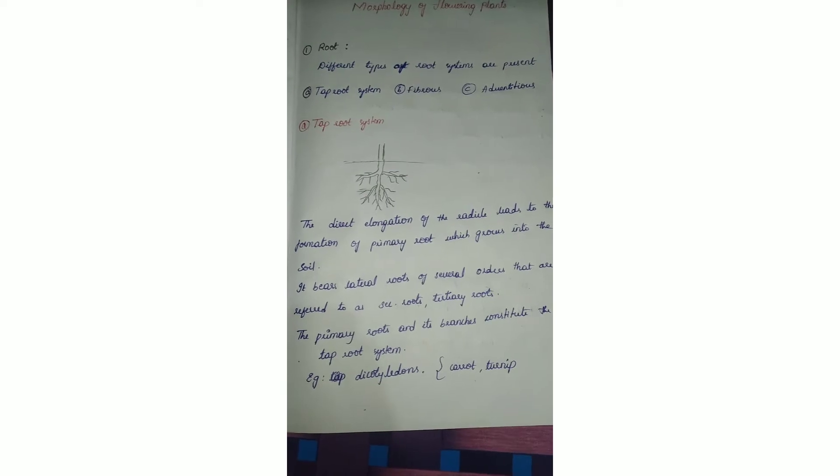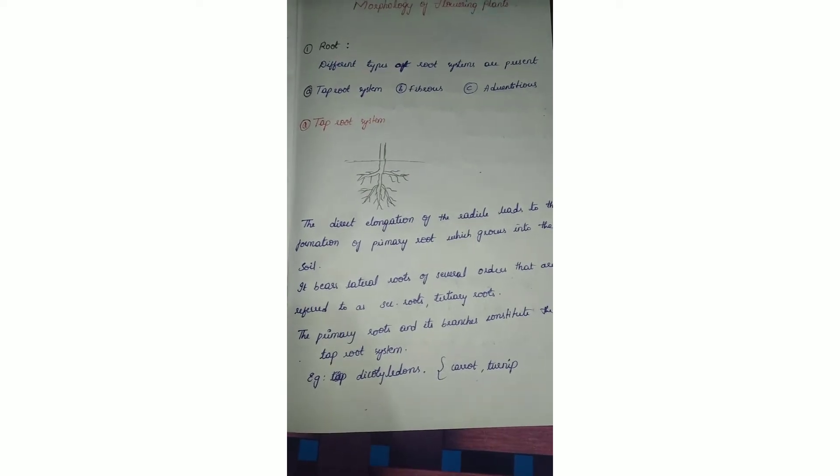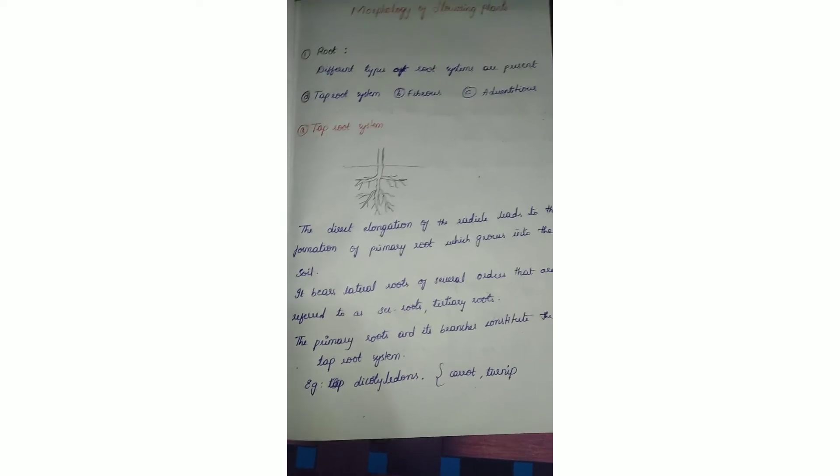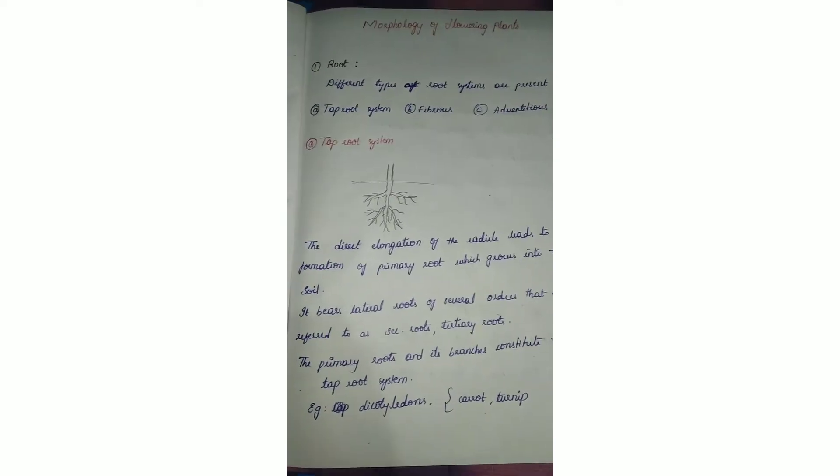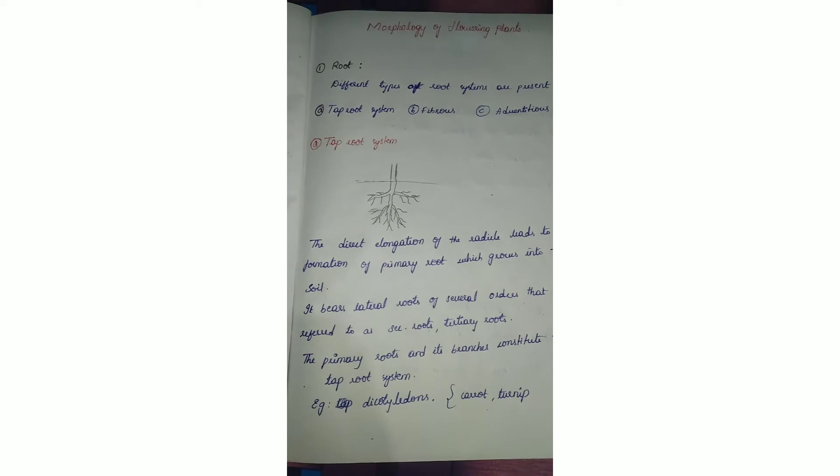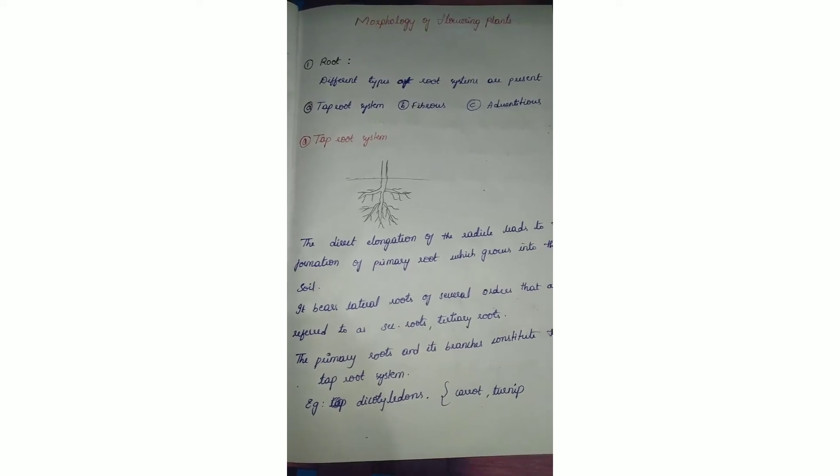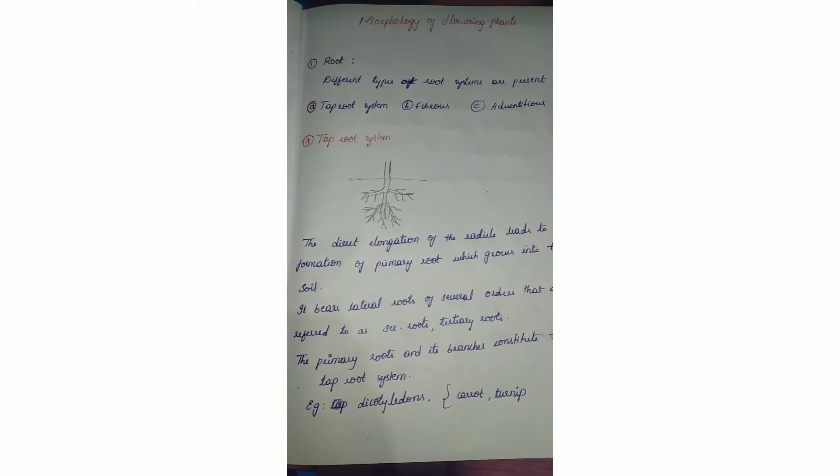Roots are helpful for absorption of water and minerals from the soil. Root systems are of three types: tap root system, fibrous root system, and adventitious root system.